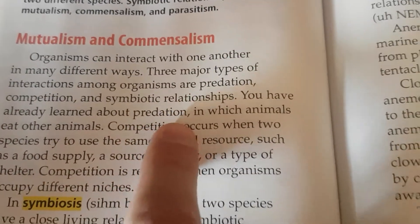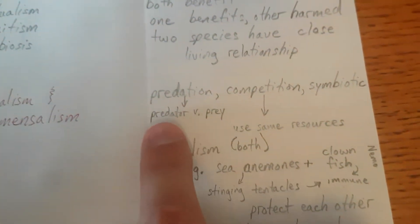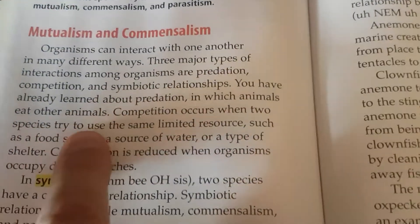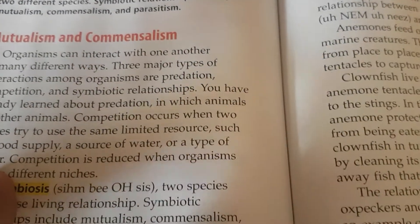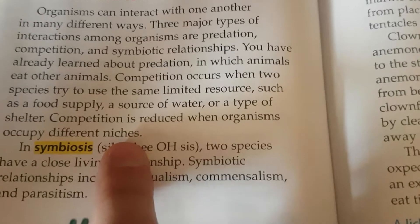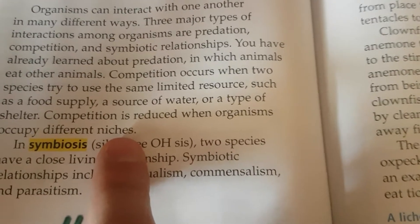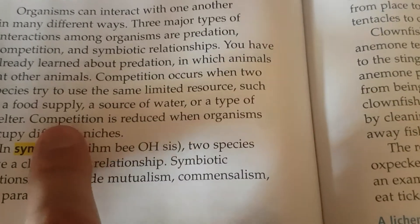You have already learned about predation, in which animals eat other animals. So predation — a little arrow — that's predator versus prey. Competition occurs when two species try to use the same limited resource, such as a food supply, a source of water, or a type of shelter. Competition is reduced when organisms occupy different niches. Remember we talked about the warblers in the same tree, but they hatch and nest at different times and eat in different areas of the tree, so they do not compete as much. So competition: arrow, use same resources.